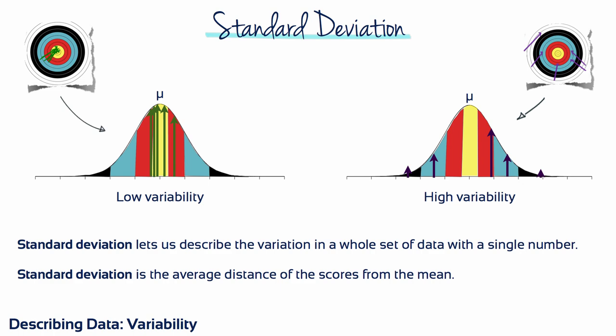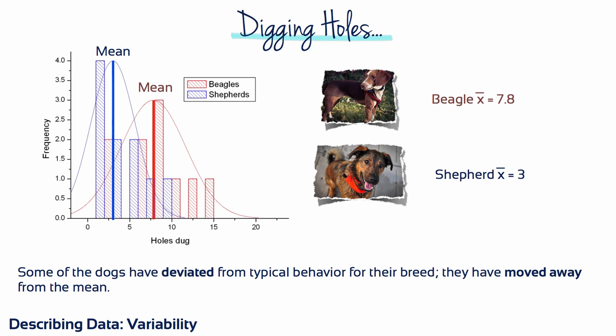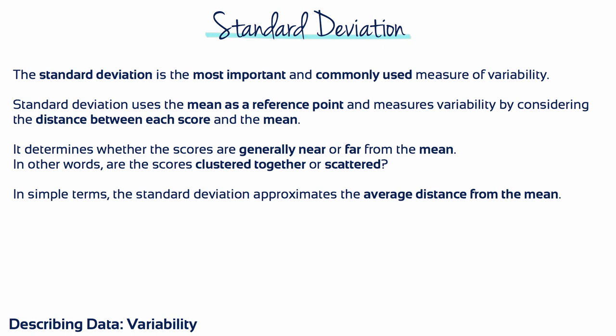Standard deviation lets us describe the variation in a whole set of data with a single number. Going back to our dogs example, we wanted a method to objectively measure by how much the dogs had deviated from the typical hole-digging behaviour of their breed — in other words, how much they had moved away from the mean. The standard deviation is the most important and commonly used measure of variability. It uses the mean as a reference point and measures variability by considering the distance between each score and the mean, determining whether the scores are generally near or far from the mean — clustered together or scattered. In simple terms, the standard deviation approximates the average distance from the mean.